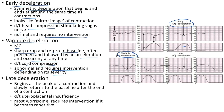Late deceleration begins at the peak of a contraction and slowly returns to baseline after the end of a contraction. It is due to uteroplacental insufficiency. It is the most worrisome deceleration and requires intervention if it becomes repetitive. This picture shows a late deceleration — begins at peak of contraction and slowly returns to baseline after the contraction ends.